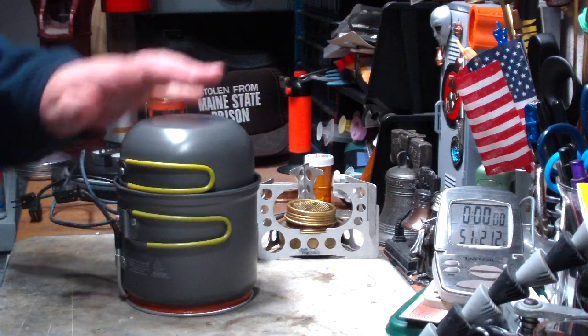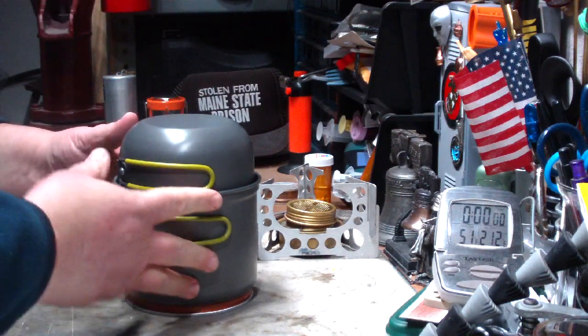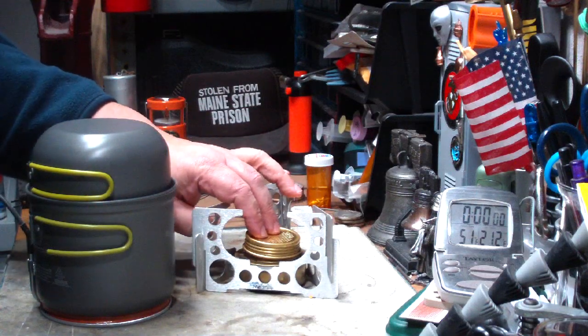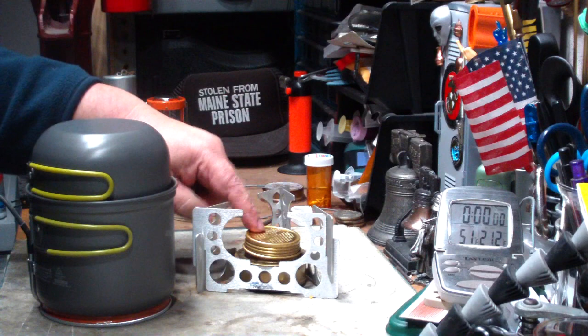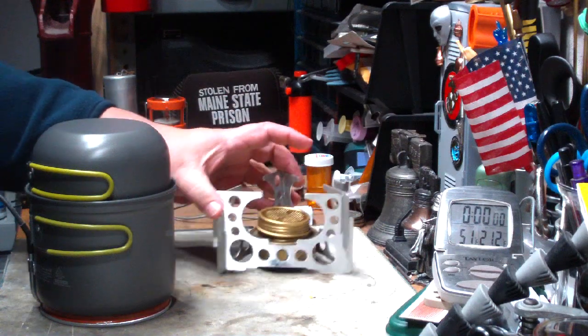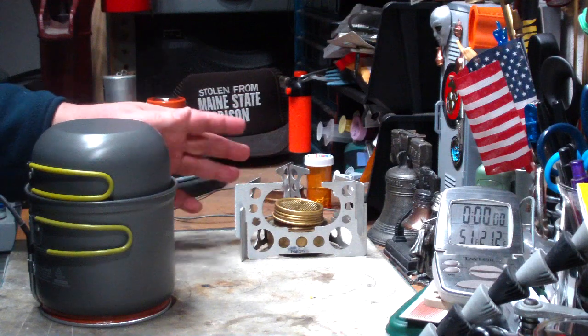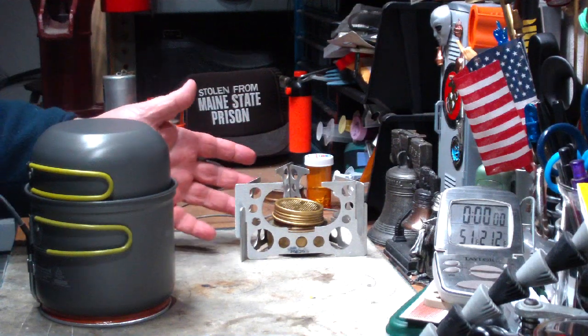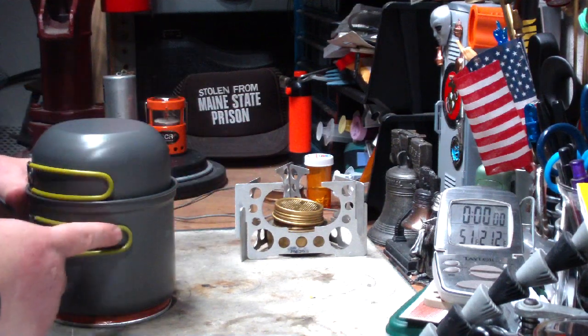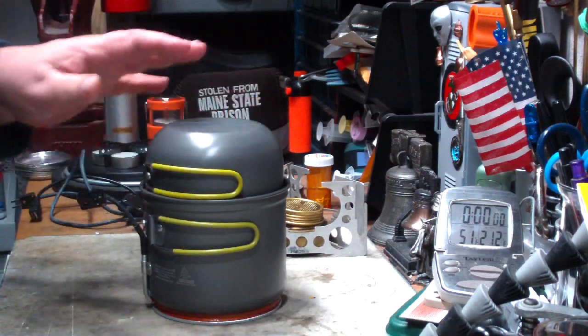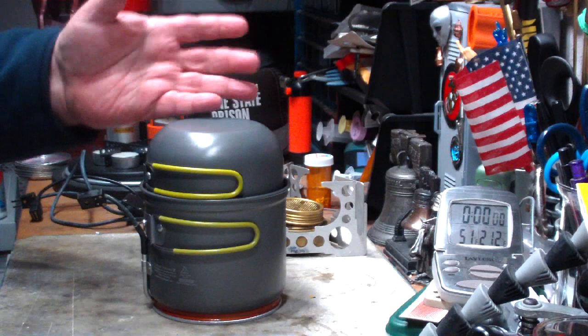I showed you the unboxing, but I'm going to test it today on the Mojo pot stand using a mini trangia burner. I've done many boil tests with this and times come out about four, five, six minutes depending. But I think with this pot, using it for boiling water probably won't be its prime thing.